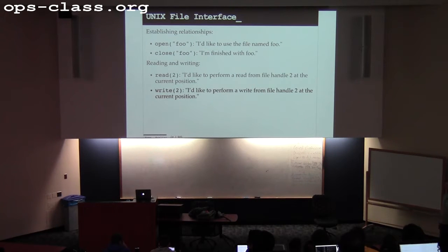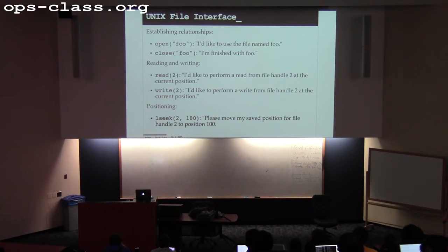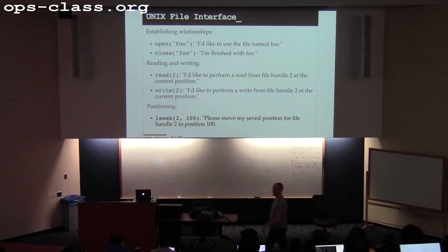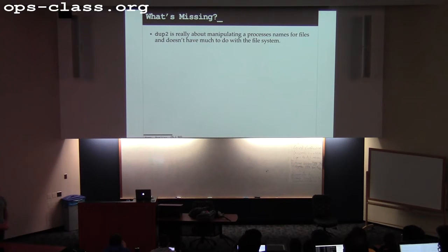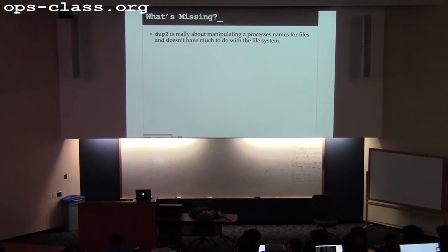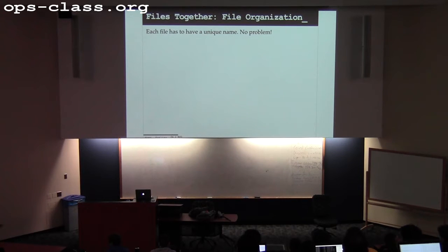I really don't understand lseek. I'm sure you guys remember how the file system interface works — establishing relationships, accessing files, moving the location around in the file. This is the relationship processes have with files. dup2 is all about the relationship between the process and the operating system, and really has nothing to do with the file system. Duping just creates a new alias for the same file, so it's not that interesting.